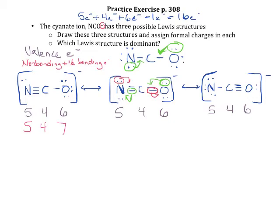Then we subtract those values from the valence electrons each atom brought. Nitrogen brought five and feels like it has five — formal charge of zero. Carbon brought four and feels like it has four — formal charge of zero. Oxygen brought six but feels like it has seven — formal charge of negative one.